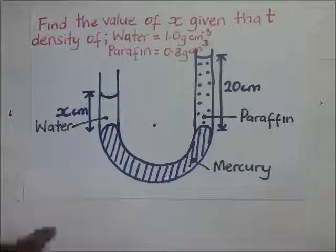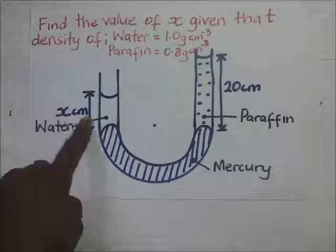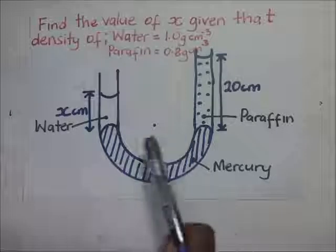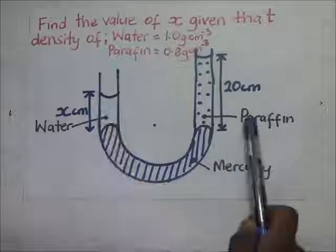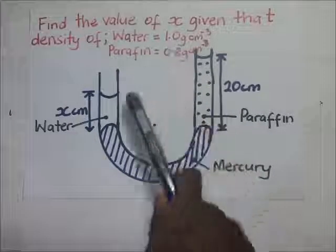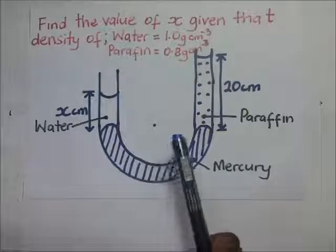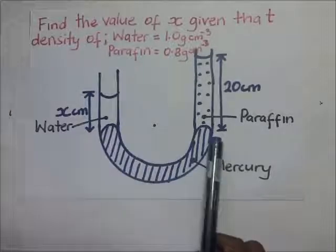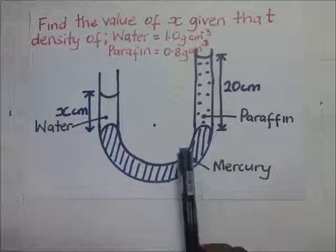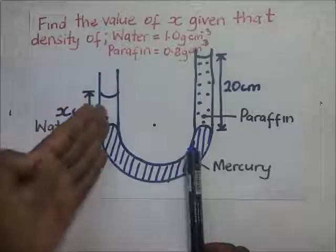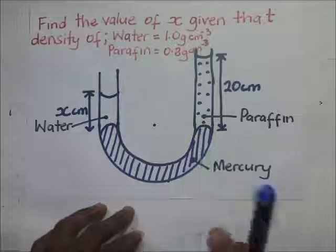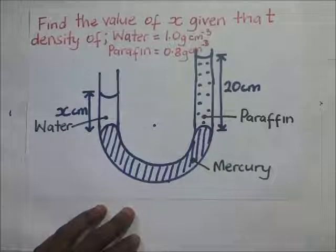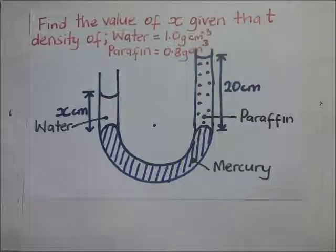To find the height of water in this limb, we've been given the density of water and the density of mercury. We know that for this system to balance, the pressure in this limb must be equal to the pressure in the other limb. That's the principle we use.